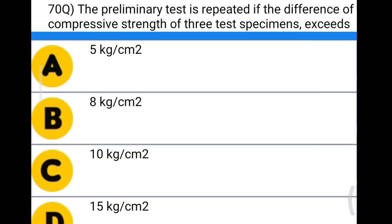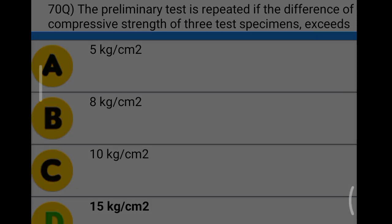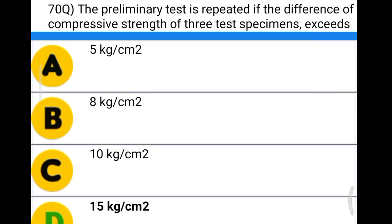Next question: the preliminary test is repeated if the difference of compressive strength of the three test specimens exceeds option A: 5 kg/cm², option B: 8 kg/cm², option C: 10 kg/cm², option D: 15 kg/cm². The correct answer is option D, 15 kg/cm².